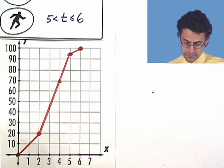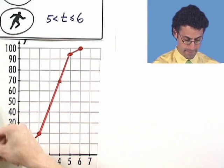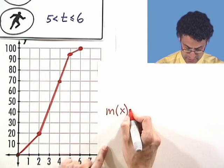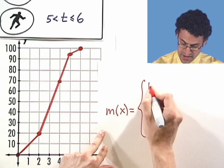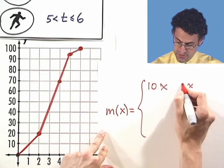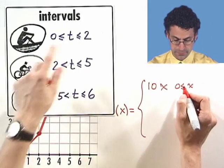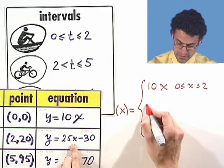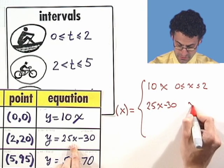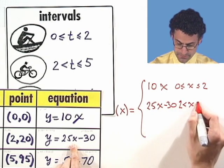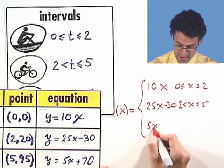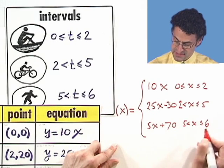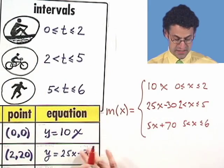And you can write this piecewise curve precisely, in fact, like this. We'd say that her path, so I'm going to call it M for Margaret. M of x equals one of three things. It equals 10x for x's between 0 and 2. It then equals 25x minus 30 for x between 2 and 5. And finally, 5x plus 70 for x's between 5 and 6. So that's how we'd express that in terms of an equation.